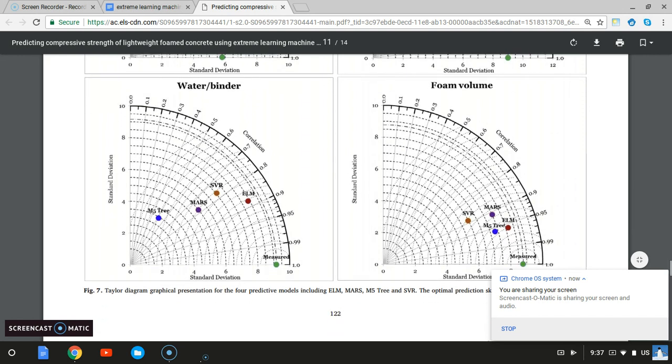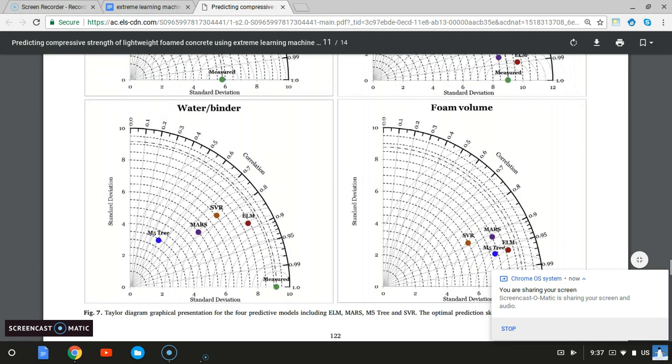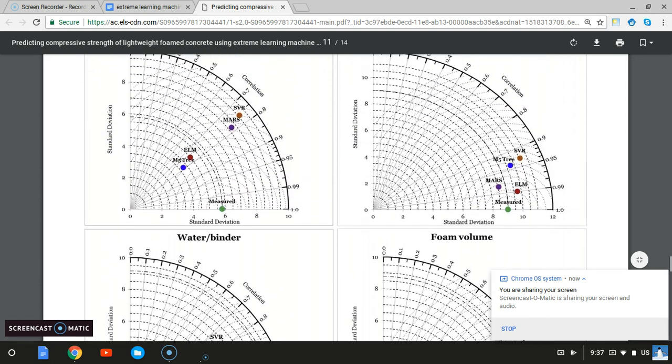Other models are sometimes better, sometimes worse. Like here, they're similar, but sometimes they have a big outlier. Whereas here, ELM is like 0.99 and SVR is somewhere closer to 0.9.